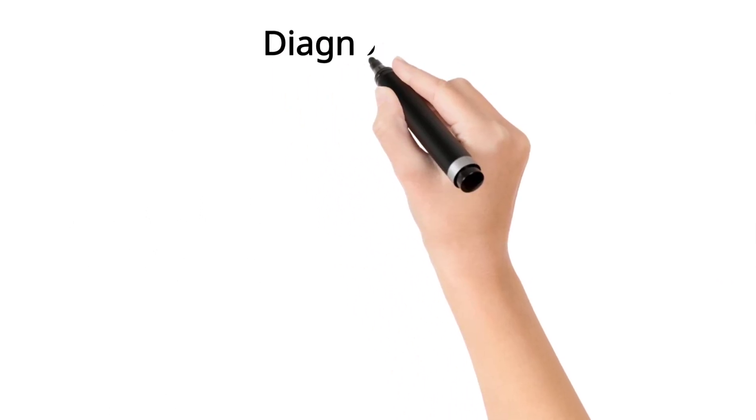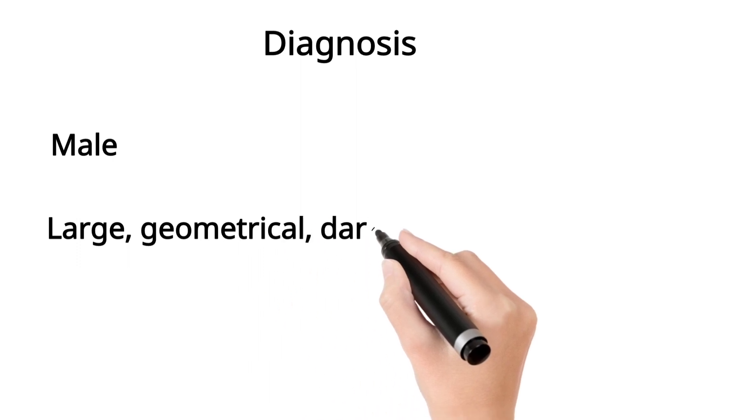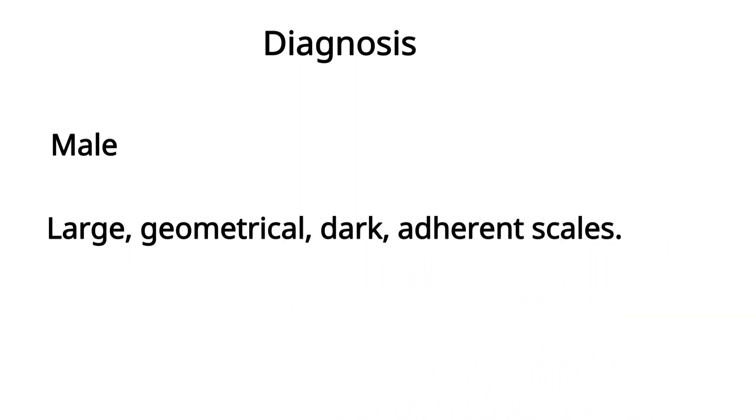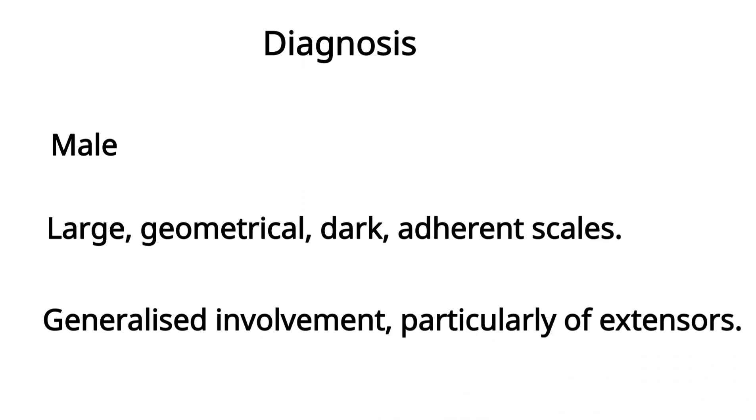The diagnosis of X-linked ichthyosis is based on patient being a male, presence of large geometrical, dark adherent scales with generalized involvement, particularly of extensors with encroaching of cubital and popliteal fossa.